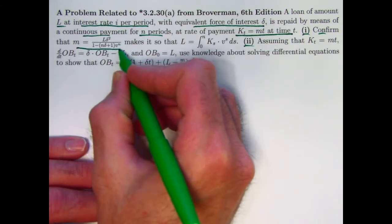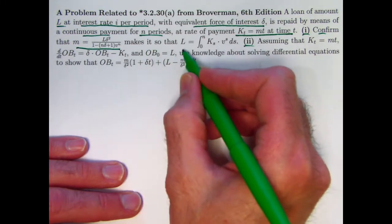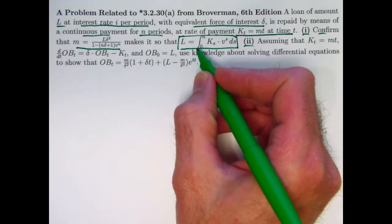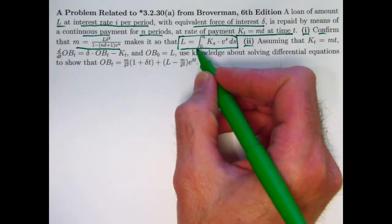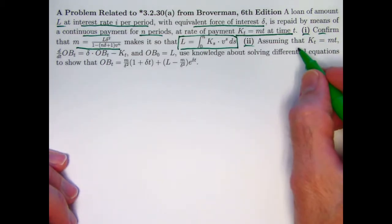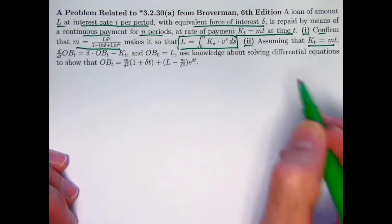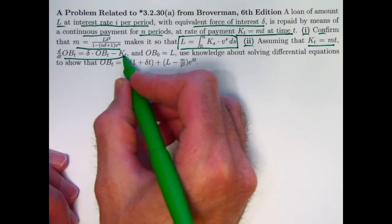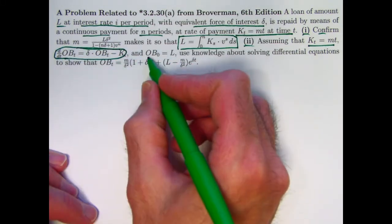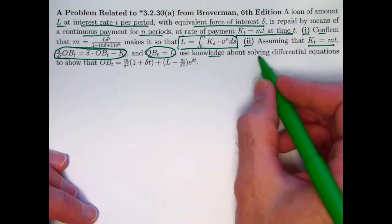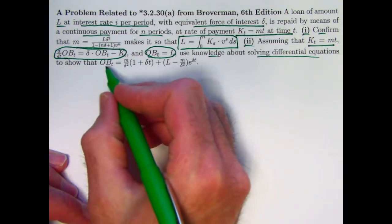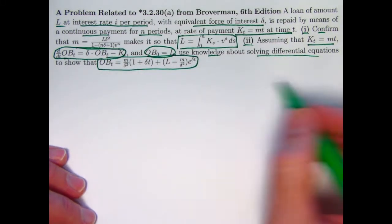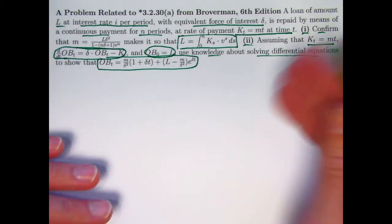Two things to do. First, confirm that this constant makes it so that this equation right here is true, and you want this equation to be true so that the payment stream does cause the loan to be paid off by time n. And then the second thing is assuming we've got this proportionality to T with our payment stream and assuming we've got the differential equation from the last video right here, and this initial condition, use knowledge about solving differential equations, integrating factors, to show that this formula is true for the outstanding balance as a function of time.